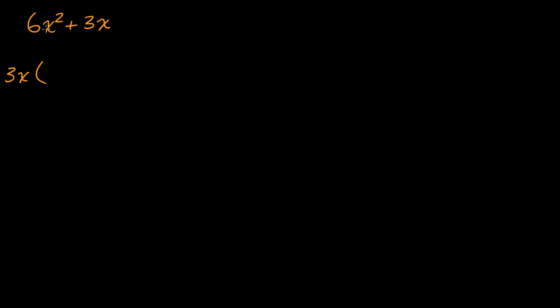So if you factor out a 3x, 6x² divided by 3x, you're gonna have a 2x left over there. And then 3x divided by 3x, you're going to have a one. And that's about as much as we can actually factor it. And you can verify that these two expressions are the same if you distribute the 3x.